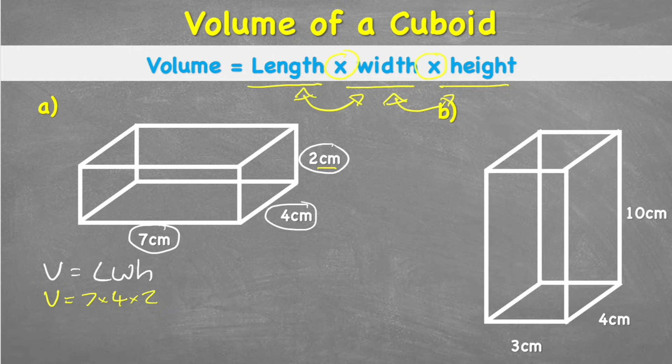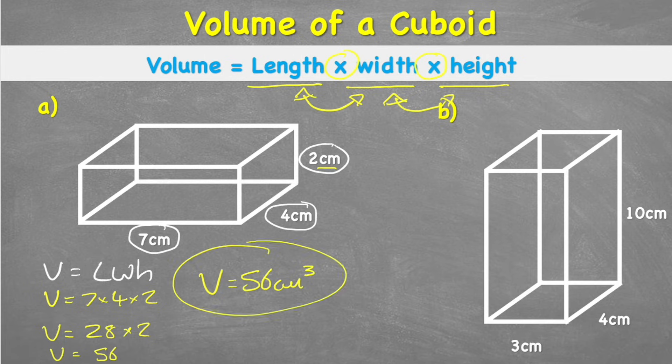And again, as I said, it doesn't matter which way around we measure this, we're going to get the same answer. So I'm going to do seven times four is 28. 28 times two equals 56. So in this first example, I have a volume of 56. But because, like we said, we're building cubes, I write centimetres cubed. And there's my first answer.